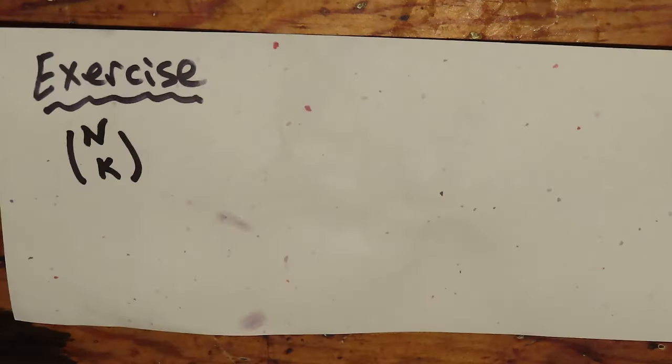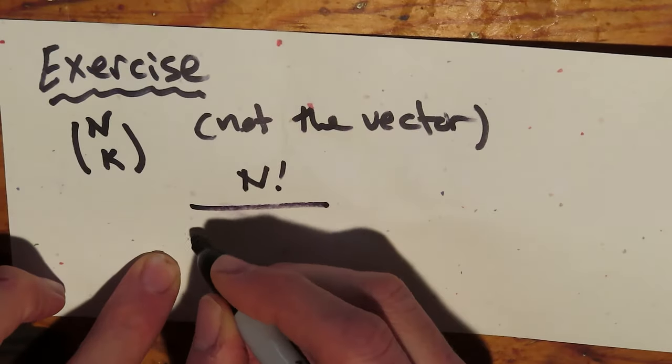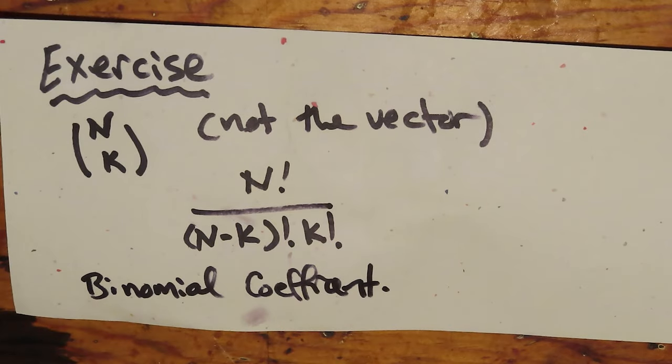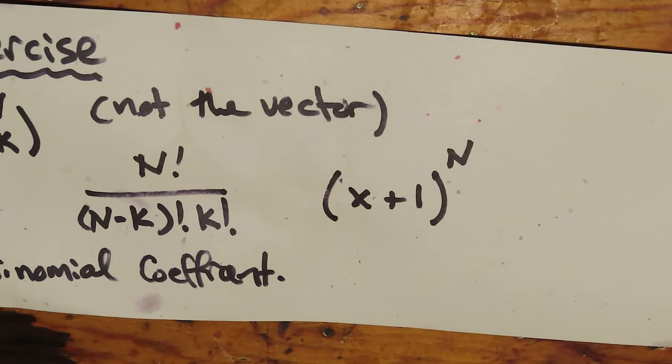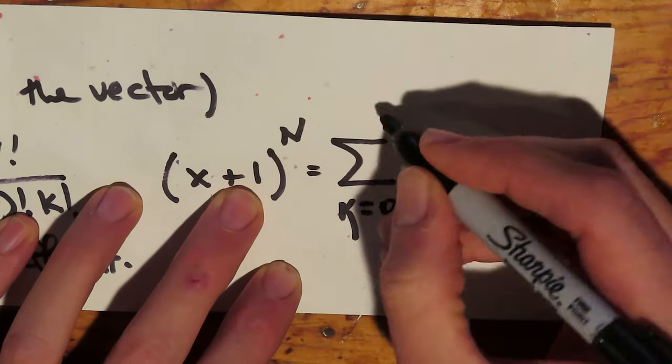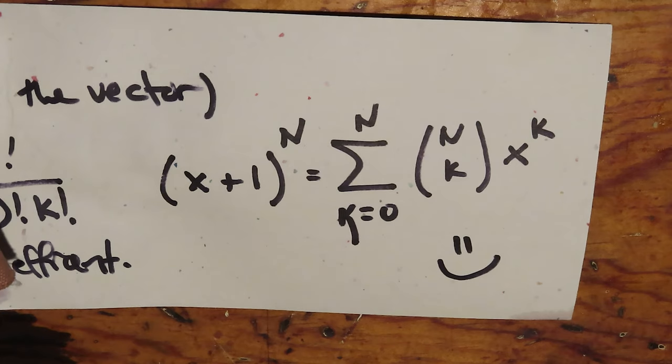For this, we need the binomial coefficients, given by the symbol n choose k, which means n factorial divided by (n minus k) factorial divided by k factorial, where k factorial is k times (k−1) times (k−2) all the way down to 1. So for example, 3 factorial is equal to 6. Note that 0 factorial is equal to 1. A quick way to compute these coefficients is to consider the binomial (x + 1) to the nth power, multiply that whole thing out, look at the coefficients in front of each term in that polynomial, and assign the coefficient of x^k to n choose k. A little bit of 19th century mathematical culture, if you like.